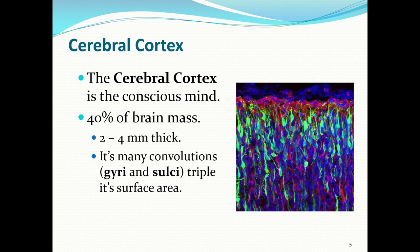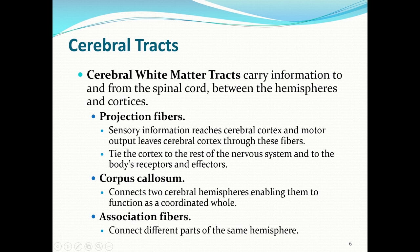Cerebral tracts carry information to and from the spinal cord as well as between the hemispheres and the cortices. There are three major types: projection fibers, the corpus callosum, and association fibers. Projection fibers contain sensory and motor information, tying the cortex to the rest of the nervous system and the body's receptors and effectors. The corpus callosum connects the two cerebral hemispheres, enabling them to function as a coordinated whole. Association fibers connect different parts of the same hemisphere.